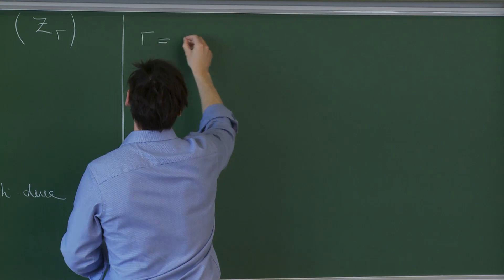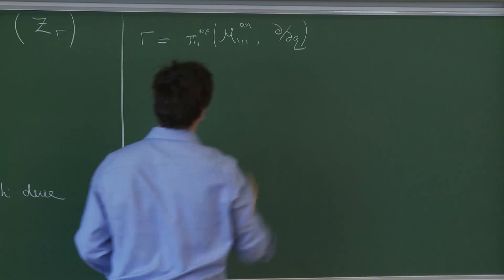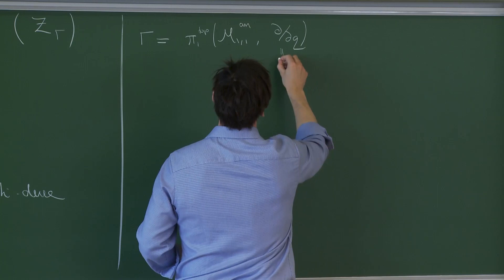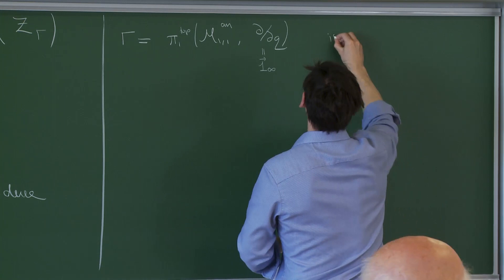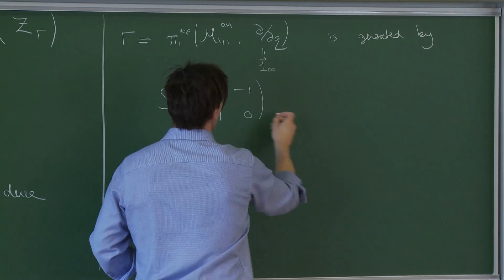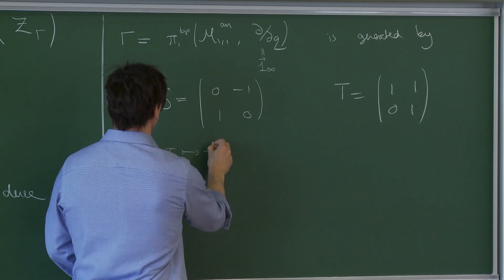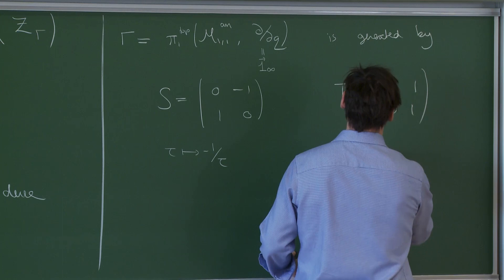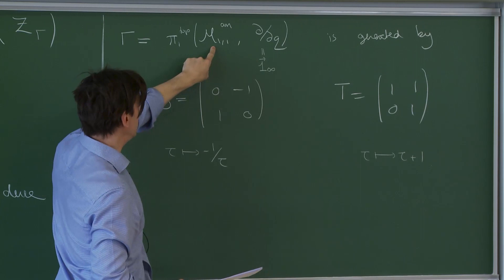Gamma was just the topological fundamental group of M11 with respect to a tangential base point, which I defined last time as d/dq — a unit tangent vector at the cusp. As you all know, SL2(Z) is generated by two matrices, which go by the name of S and T. These correspond to the modular transformations: S maps tau to minus 1/tau (inversion), and T is translation tau maps to tau plus 1. So these elements S and T should be thought of as paths in M11.